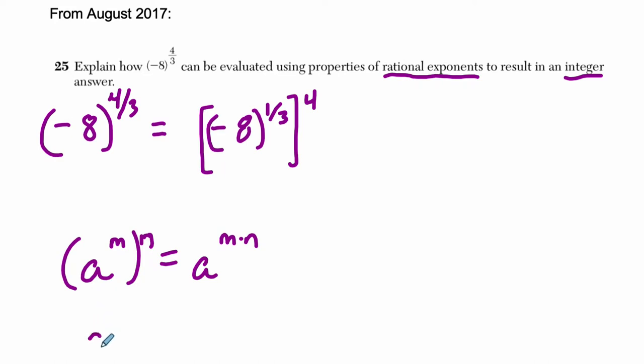So for example, let's say you have 2 to the 3rd power, and then you have that whole thing to the 4th power. This is going to be equal to 2 to the 12th power. 3 times 4 is 12.